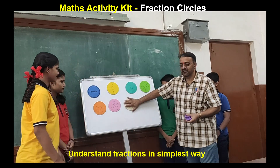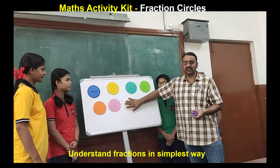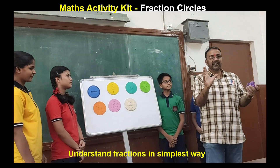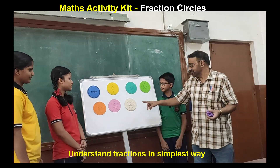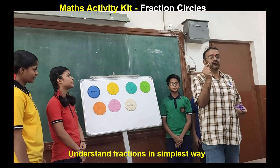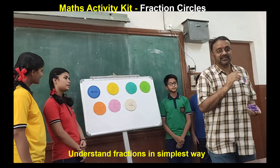We got one whole circle. The circle is divided into eight equal parts. Seven equal parts — each part is equal to one by seven.